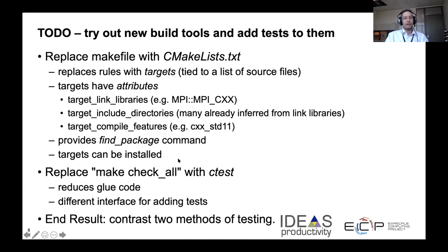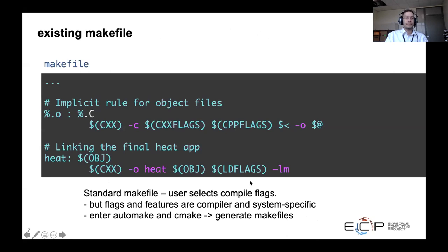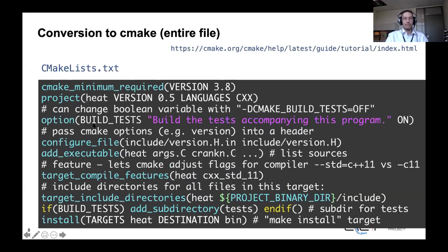CMake also provides a nice way to do testing, which replaces manually entering your make check targets with a CTest command. CTest then goes and finds its list of tests and runs them. The end result of this tutorial is we get to contrast these two methods. The existing makefile is kind of the standard — here's a rule for compiling a C program and here's a rule for compiling your ending program. In CMake, it looks more complicated, but I want to point you at the tutorial which goes through how to add these steps and how to create the CMakeLists file step by step.